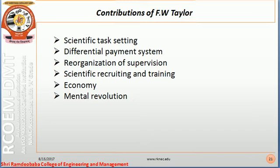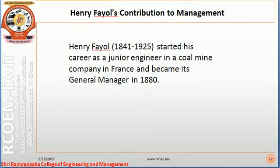If there are eight people in a work group, they should be divided into two groups of four — one doing the planning and one doing the execution. Recruitment and training should be scientific, proper, and professional. Resources, raw materials, and energy should be used economically. Lastly, Taylor said a mental revolution is the need of the hour — employees should think about their employers and employers should think about their employees, so both are mutually benefited.